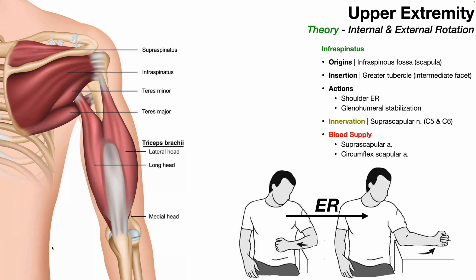Now moving on to external rotation — there are two muscles. The first is the infraspinatus. We're back to a posterior view of the scapula, confirmed by the visible scapular spine. Above the spine is the supraspinatus. Below the spine is the large basin on the posterior aspect of the scapula — the infraspinous fossa — which is the origin of the infraspinatus. The fibers converge into a tendon that inserts on the intermediate facet of the greater tubercle.